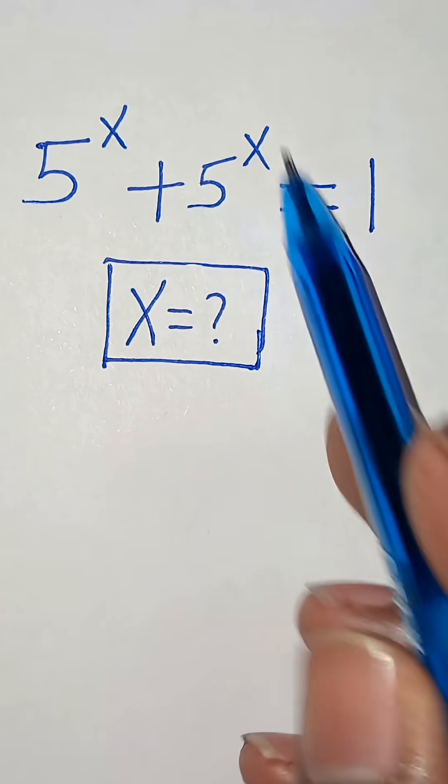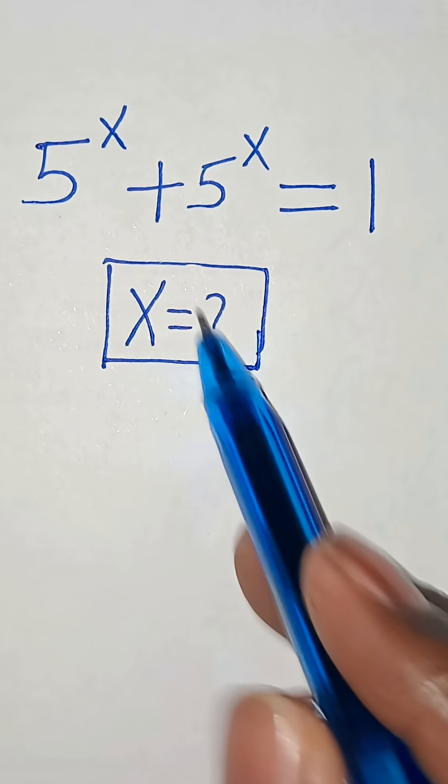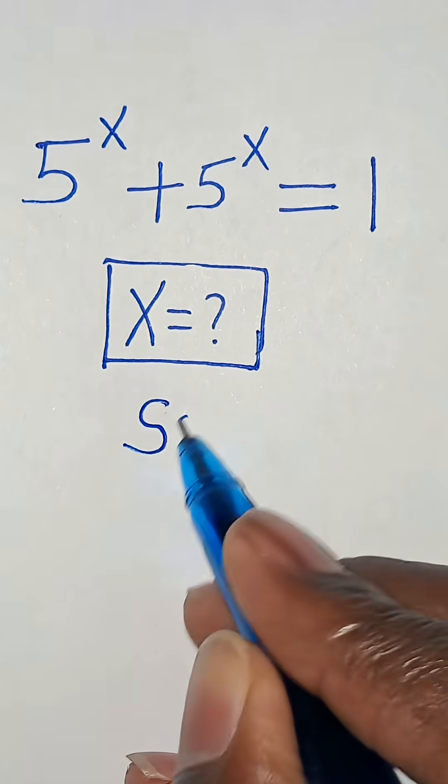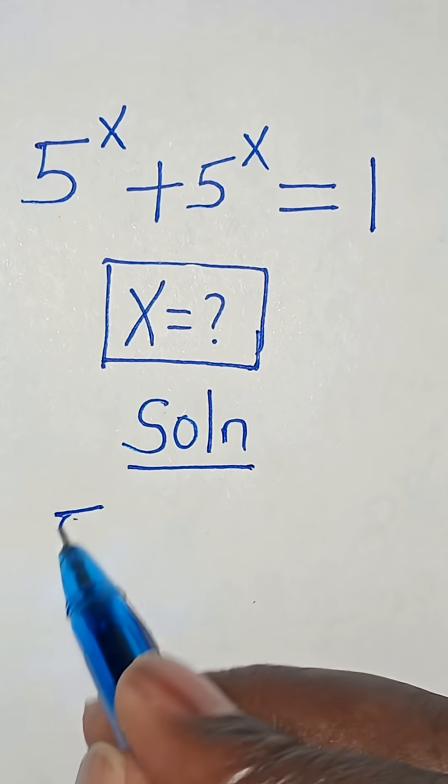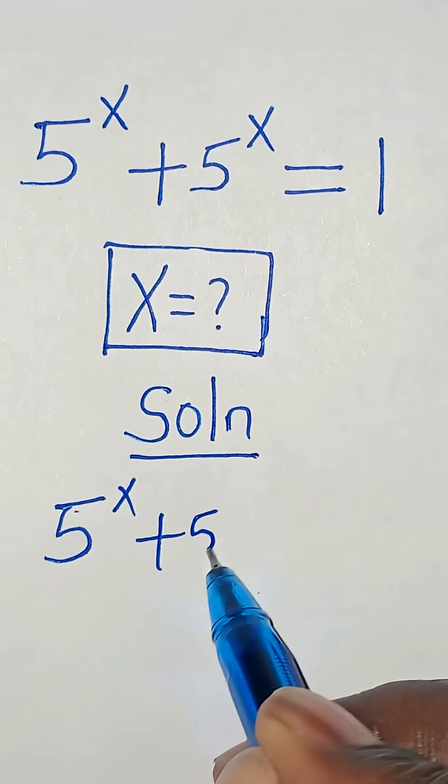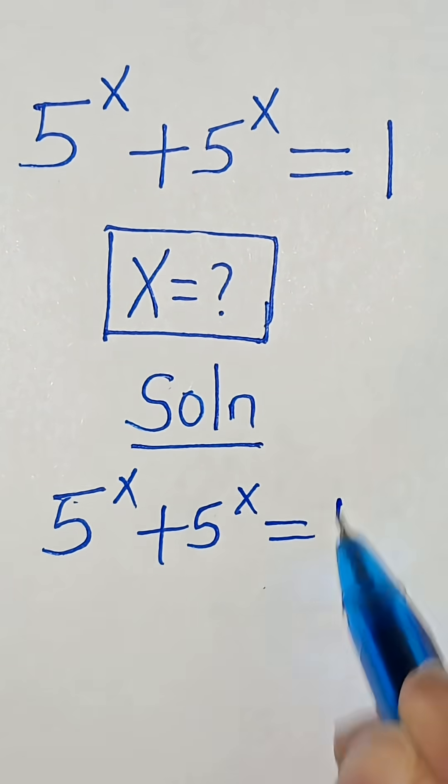5 to the power of x plus 5 to the power of x, this is equal to 1. So what is the value of x? Now let's provide a solution. From here, 5 to the power of x plus 5 to the power of x, this is equal to 1.